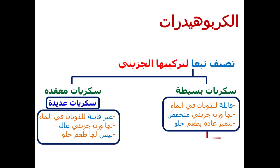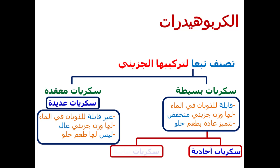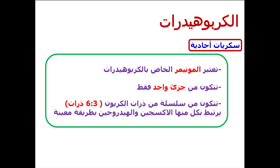السكريات البسيطة تنقسم إلى نوعين: إما سكريات أحادية وإما سكريات ثنائية. السكريات الأحادية هي المونومر بتاع الكربوهيدرات، بتتكون من سلسلة من ذرات الكربون من ثلاثة لستة ذرات كربون، وترتبط مع الأكسجين والهيدروجين بطرق معينة.